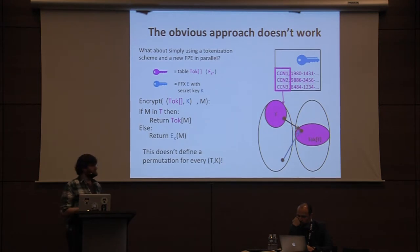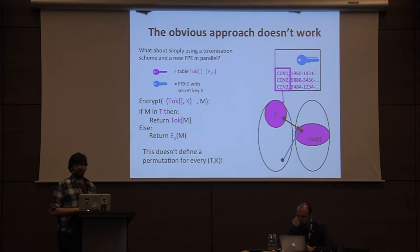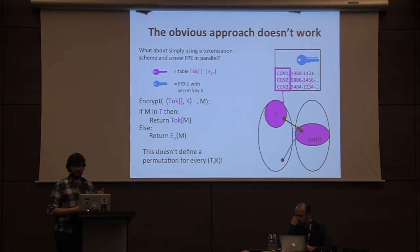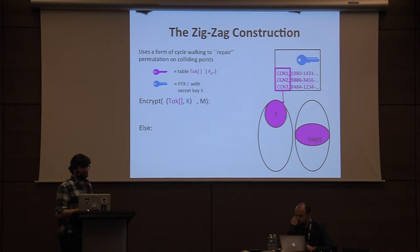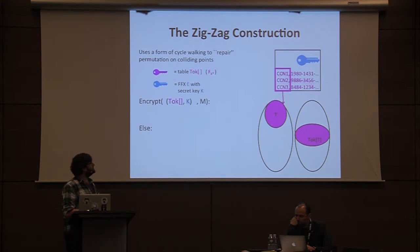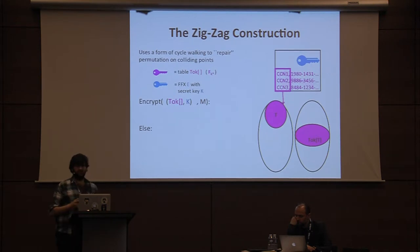Unfortunately, it's not hard to see that you'll get collisions in the output, so this doesn't even preserve the permutivity of the set we're trying to encrypt. We have to discard this basic construction, but fortunately a slight tweak of the basic idea gives us what we need.